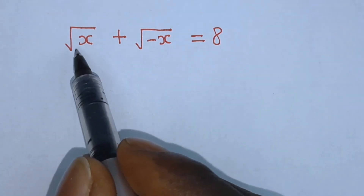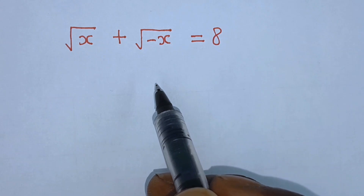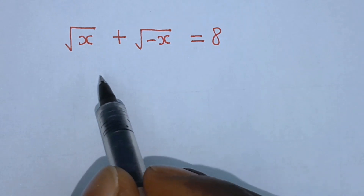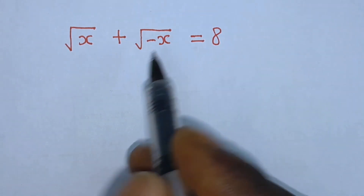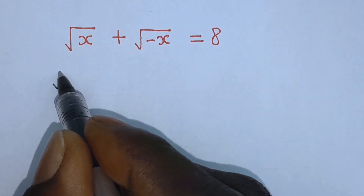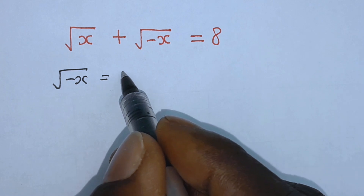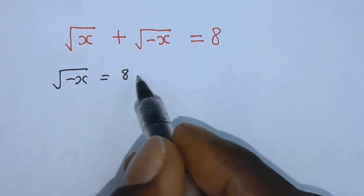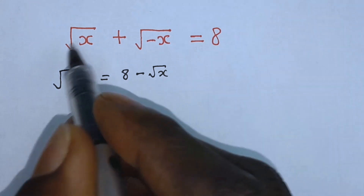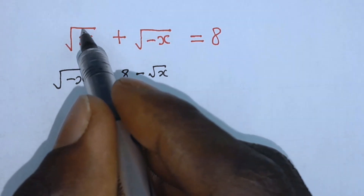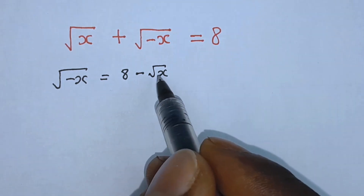We have root x plus square root of minus x is equals to 8. The first step here is to isolate this radical term. So minus x which is equal to x minus root of x. With this square root of x it crosses this equality sign which will become negative x.